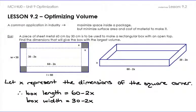This is lesson 9.2 and we're going to be talking about optimizing volume. This is just a continuation of the last lesson, which is why I'm starting with example number four. Optimizing volume goes through the same steps as optimizing area — it's just a different formula. You're now using a volume formula instead of an area formula. In the last video we used the example of Coca-Cola: you want to maximize the space inside a container while minimizing the surface area so you don't have to pay for the materials that make the actual can.